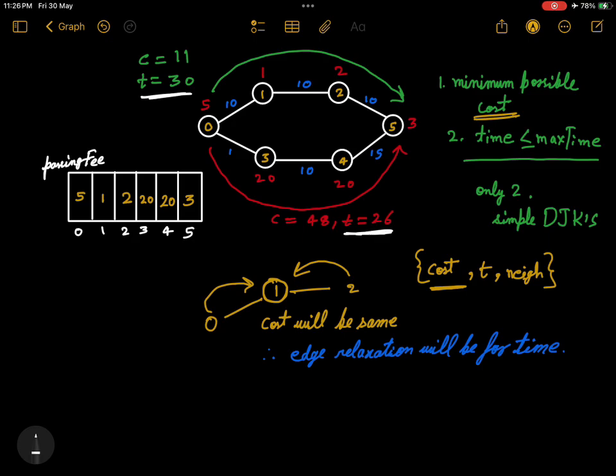But there's a catch: if the maximum time given is, let's say, 28, then we have to reject the first path even though the cost is less. So we will compute the minimum cost during traversal, but if our time exceeds the maximum time given, we will stop exploration from that node and explore from some other node.